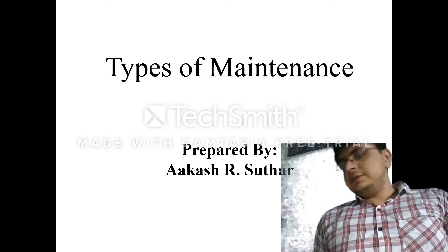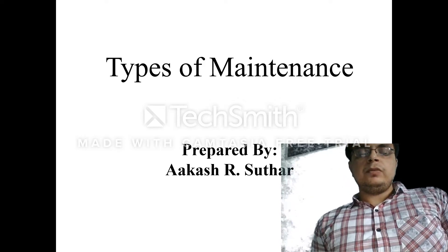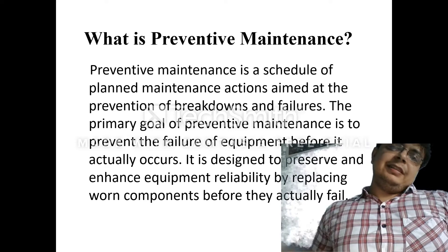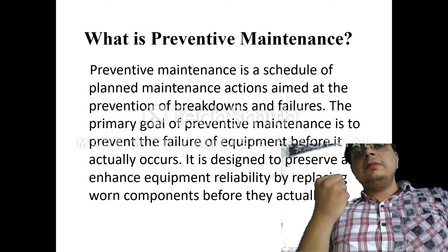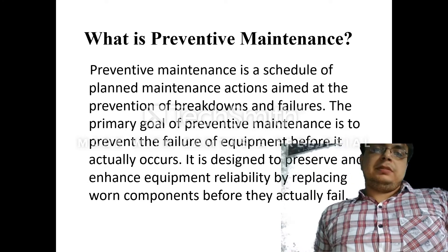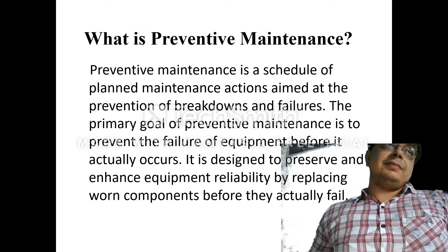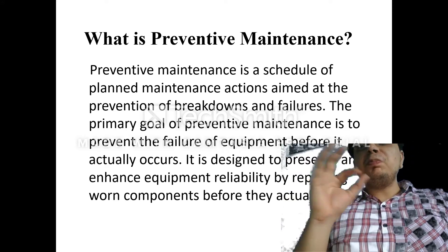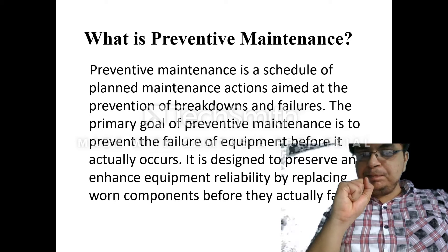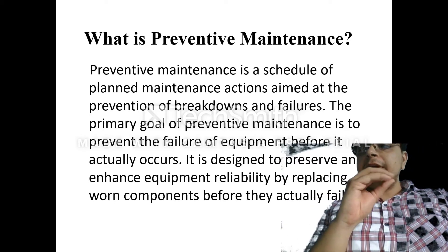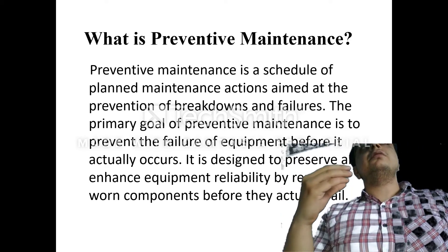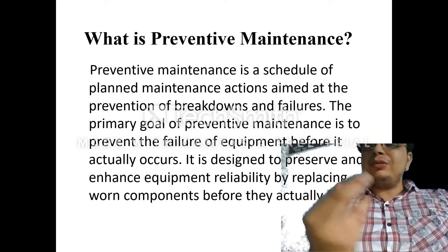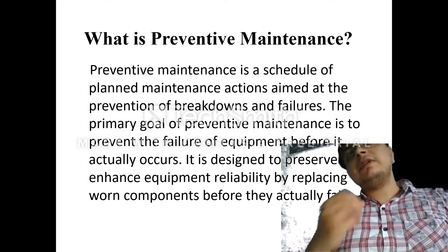Moving to our session, next is: what is preventive maintenance? The name itself suggests it is to prevent damage. Preventive maintenance is basically a planned maintenance whose main aim is to prevent the breakdown and failures. It will not allow any kind of failure to occur during work. So the primary goal of preventive maintenance is to prevent failure.